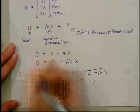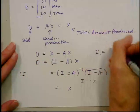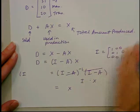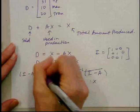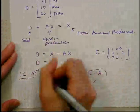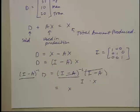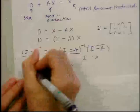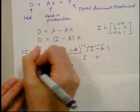On the left side, (I minus A) inverse times (I minus A) cancels to give the identity matrix, leaving X. On the right side, we do the same: multiply by (I minus A) inverse times D. This is our formula. You do not need to memorize this formula — I will give it to you on the exam.